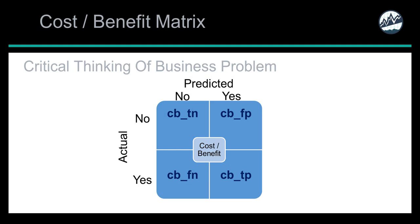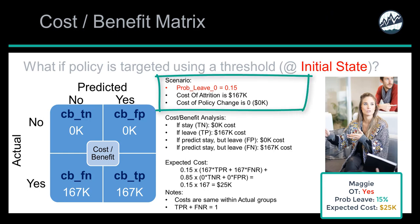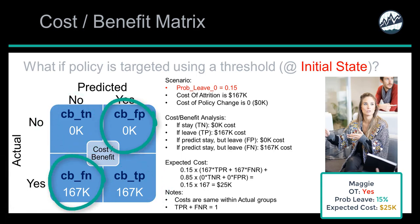The cost-benefit matrix is the final piece, developed using intuition about the problem. This is the most difficult part because it requires critical thinking about the business problem. Taking Maggie as an example in the initial state: her probability of leaving is 15% with a cost of attrition of $167,000, and the cost of a policy change is zero since no policy change is implemented in the baseline. There are four scenarios to account for: true positives, true negatives, false positives, and false negatives — each with probabilities of their own.